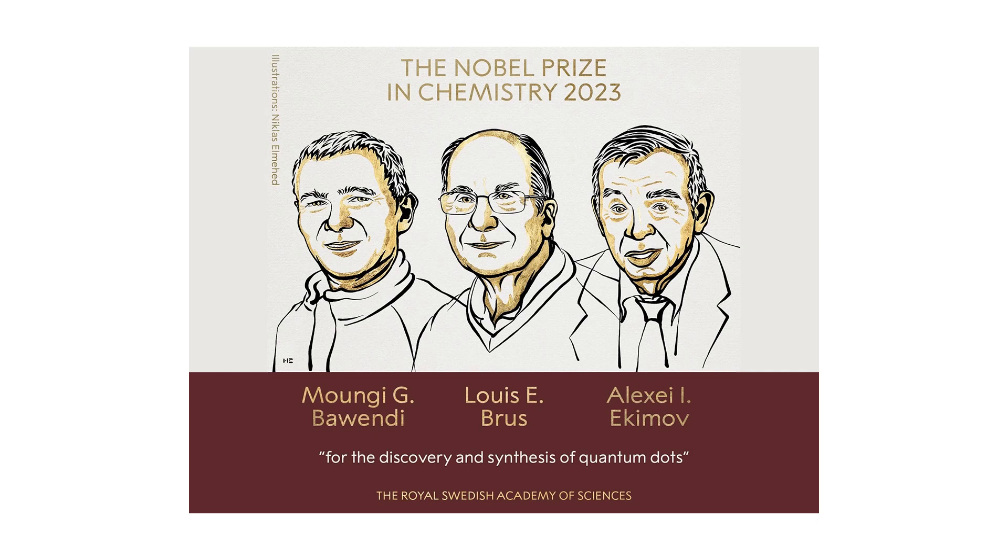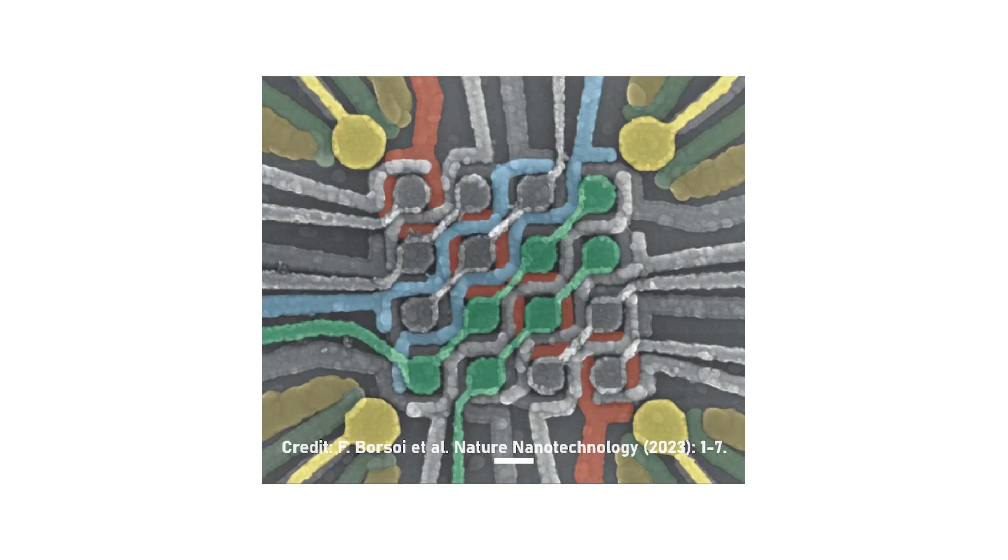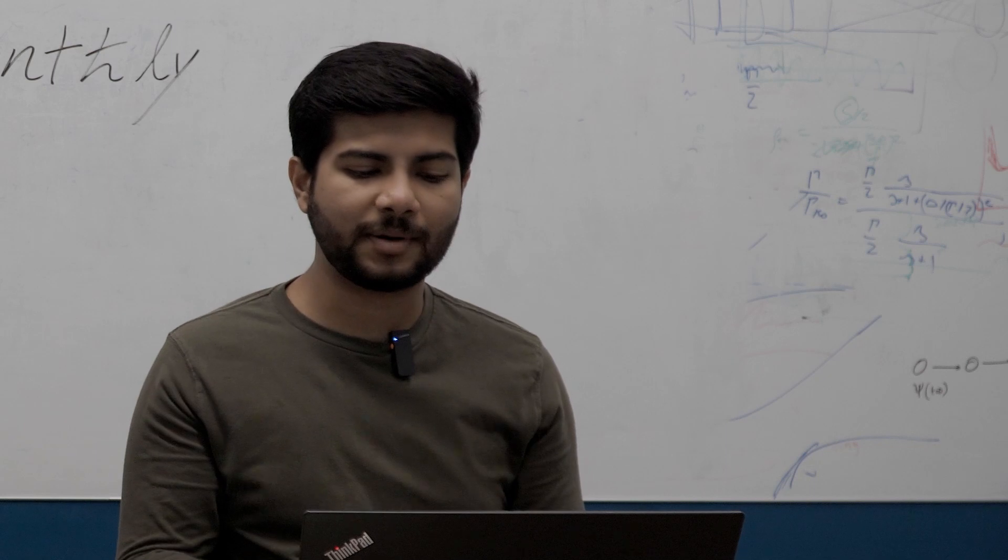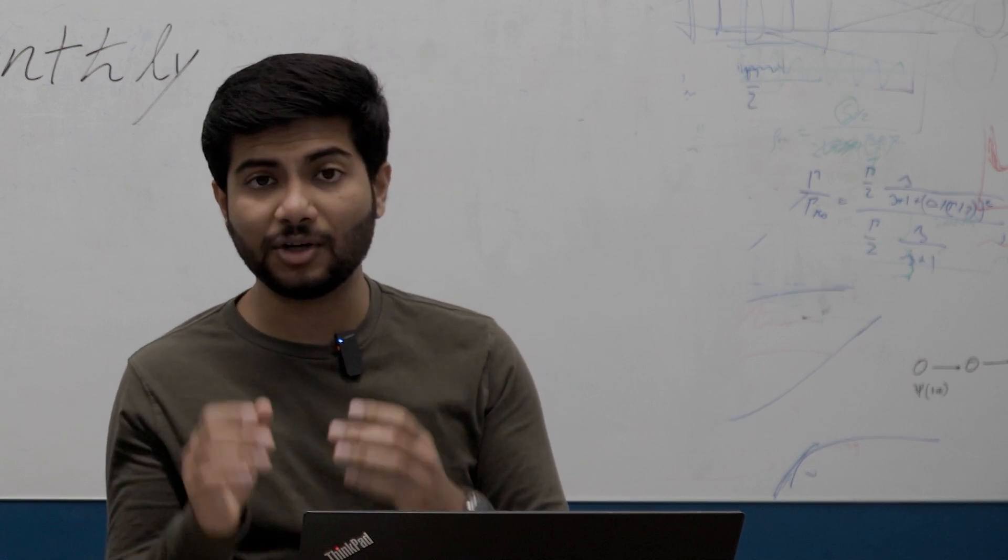Moving on to the next exciting topic. The Nobel Prize in Chemistry this year was awarded to three scientists for the discovery and development of quantum dots. The awardees are Munjiba Wendi, Louis Bruce, and Alexei Yakimov. Now you might remember that we talked about quantum dots last episode as the Delft team had developed a 2D array of semiconductor quantum dots for quantum computing. But this Nobel Prize is for a different kind of quantum dot, the original quantum dot.